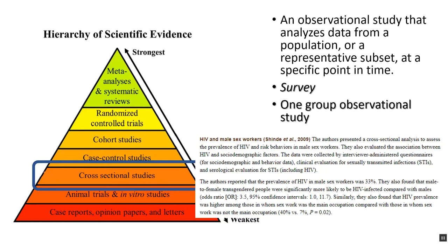Cross-sectional studies in medicine applies to observational studies that just observe. Your research methods text would call this naturalistic observation — you just look at observed data from a population. A popular version of this in psychology would be the survey, where you survey people about something. That is a cross-sectional study. You could also include the one-group observational study, which psychologists would classify as a cross-sectional study example.